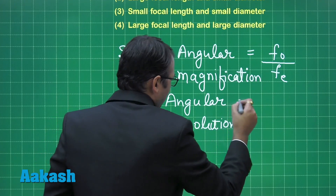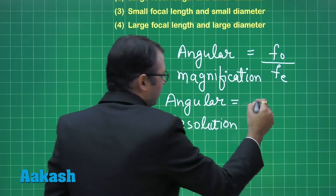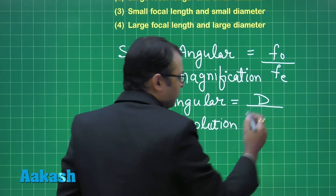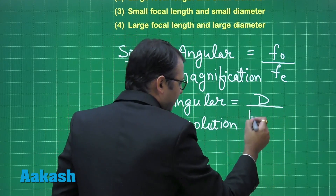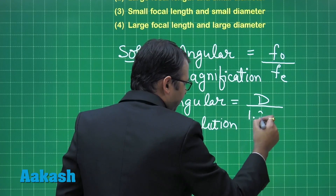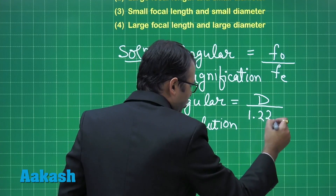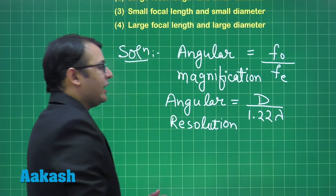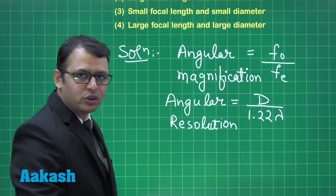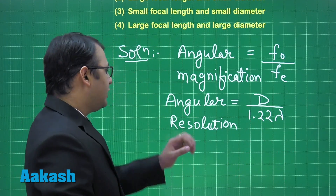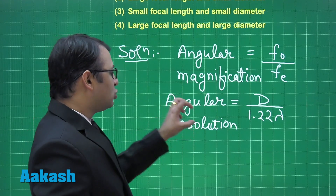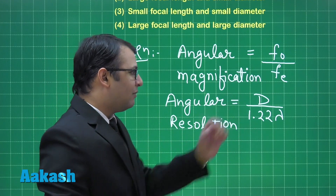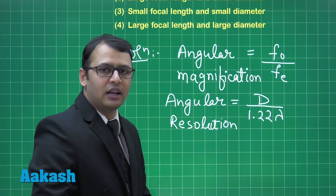The formula for angular resolution is D — that is diameter of lens — divided by 1.22 lambda, where lambda is the wavelength of light being used. So again, in order to keep resolution higher, diameter D should be large.